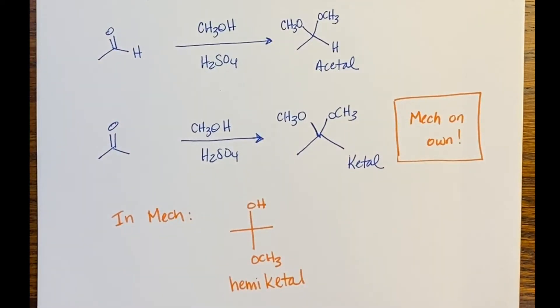So you should see this intermediate form during the course of your mechanism. But keep in mind that your hemiketal, your hemiacetals, these are not products. Your final products that we isolate are the acetals and ketals. But there are significant intermediates that we form about halfway through the mechanism.